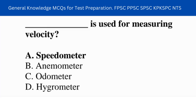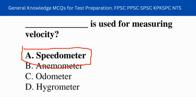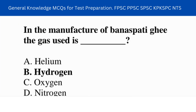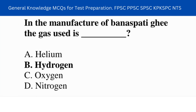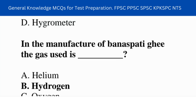Next question: this instrument is used for measuring velocity. Answer: spirometer. Next question: in the manufacture of vanaspati ghee, the gas used is hydrogen.